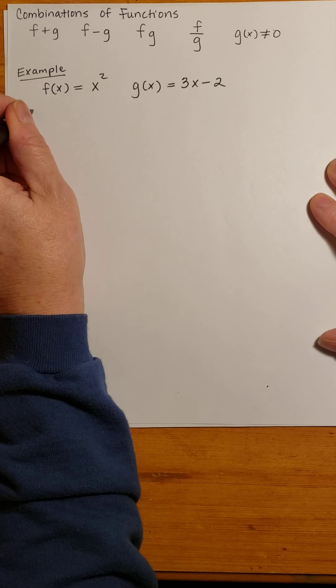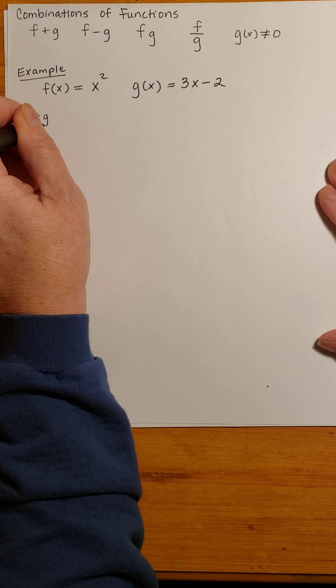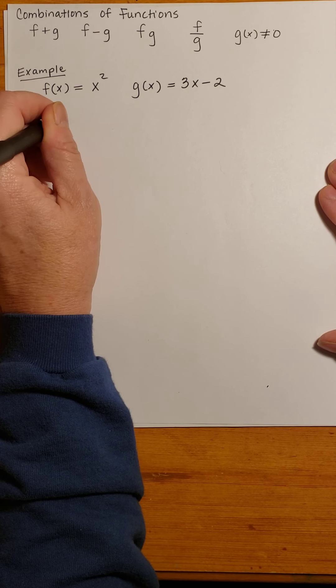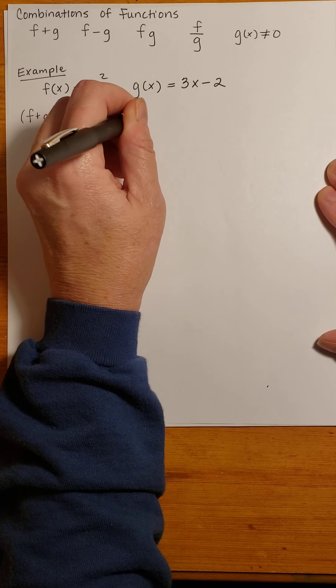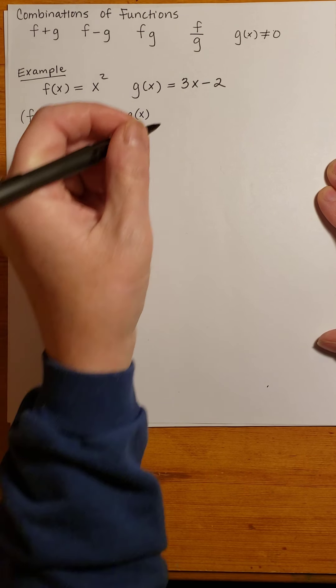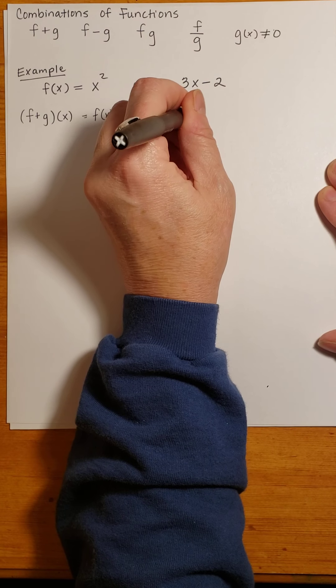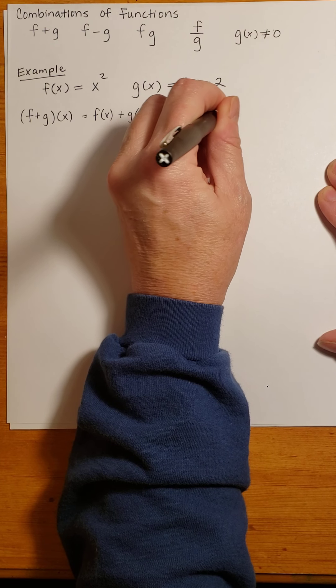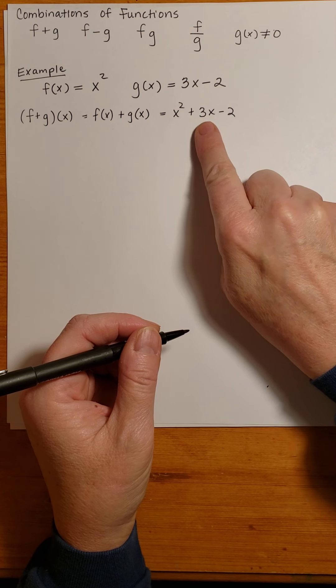So in other words, (f+g)(x) is just f(x) + g(x). And f(x) is x², and g(x) is 3x - 2. So I just take x² + 3x - 2.